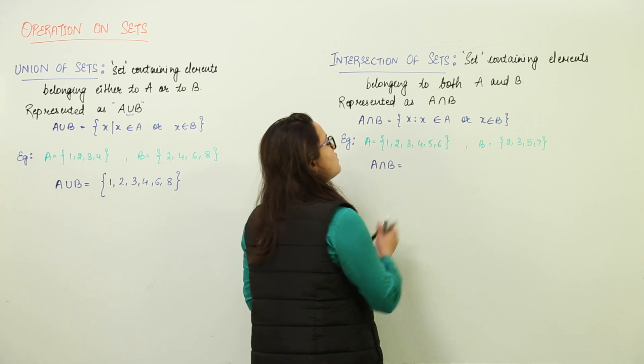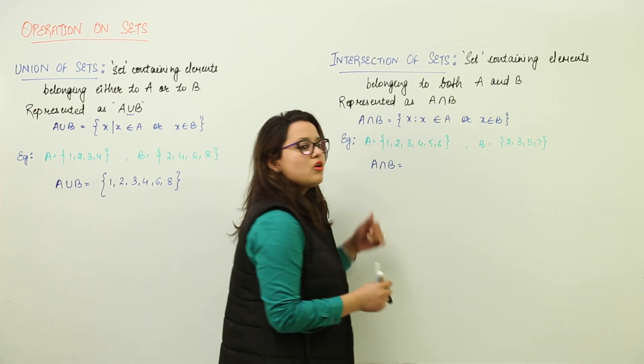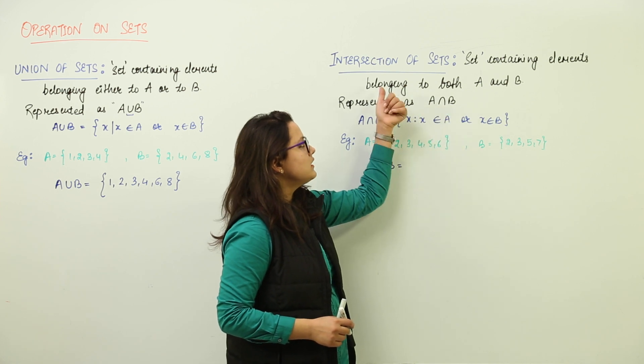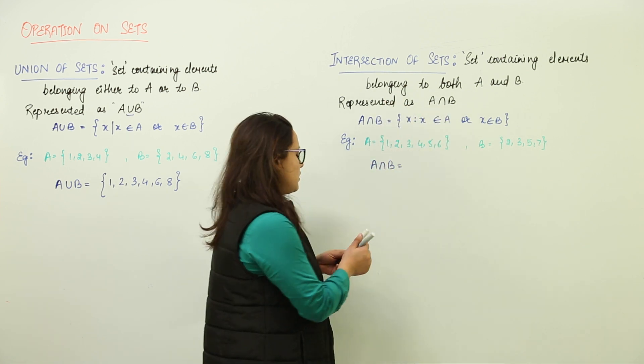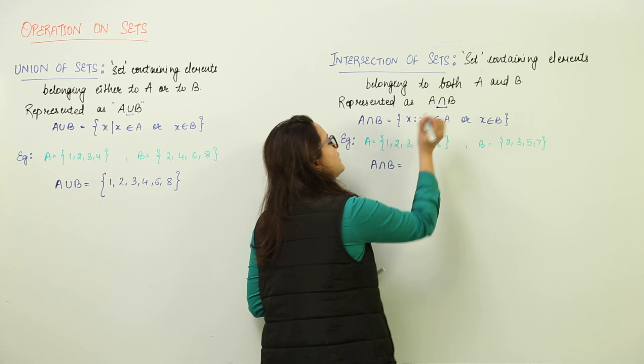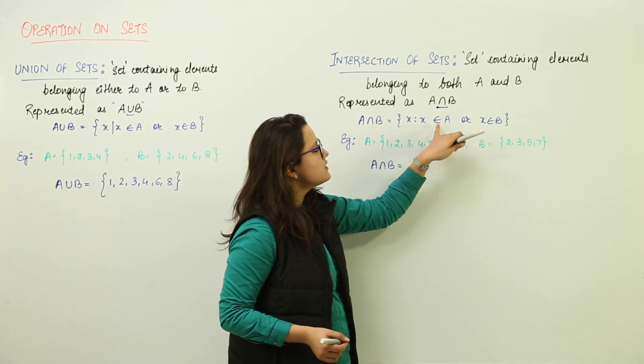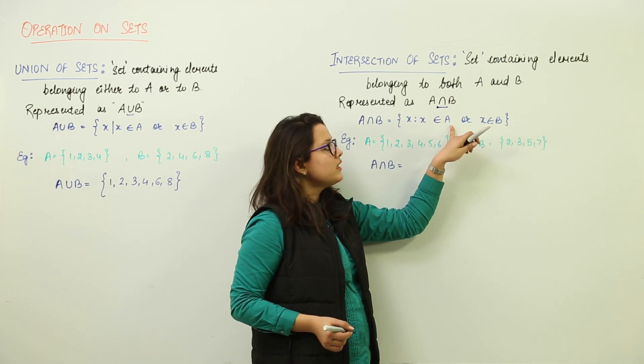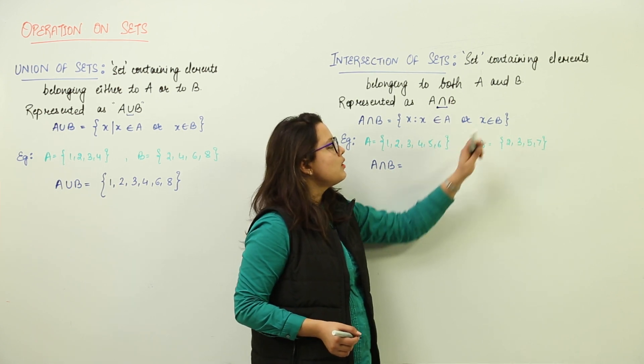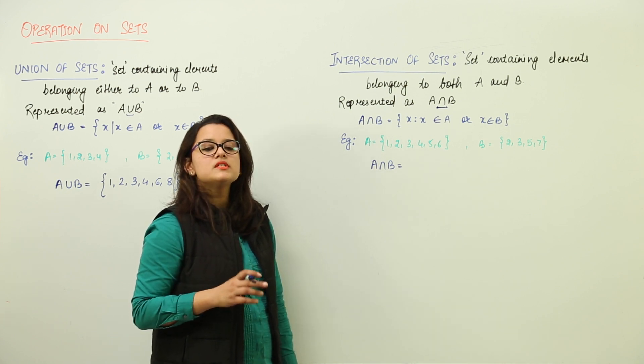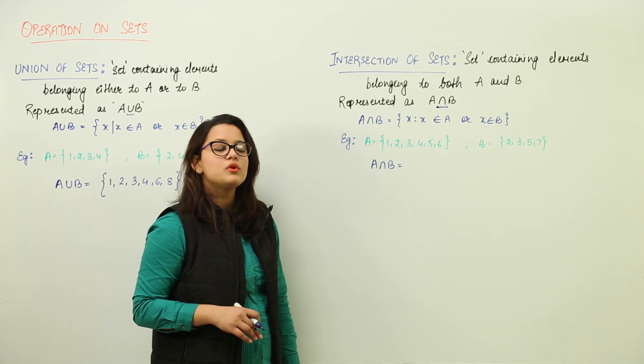We represent intersection with the opposite sign of union. Union is U and this is inverted U. Intersection is represented with inverted U and written as X such that X belongs to A and belongs to B. Both conditions must be true.